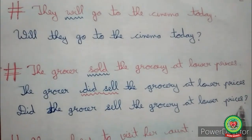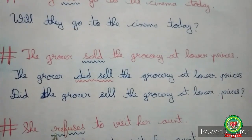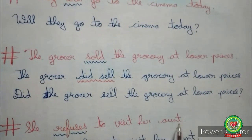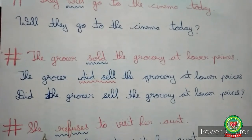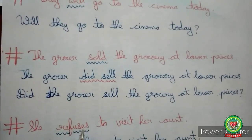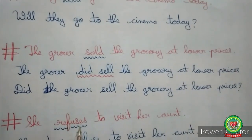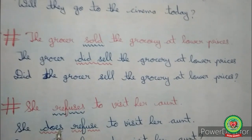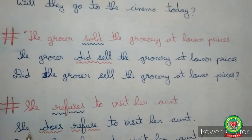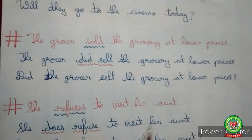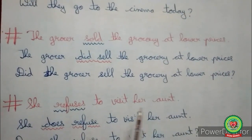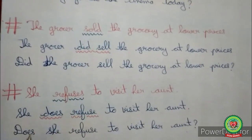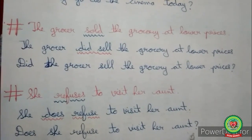See the third example: 'She refuses to visit her aunt.' Now 'refuses' is the main verb and no helping verb is present, so we will see that 'refuses' is the present form. We will insert 'does' as the helping verb, place 'does' in the beginning, and the interrogative will be: 'Does she refuse to visit her aunt?'